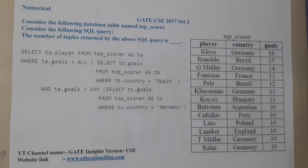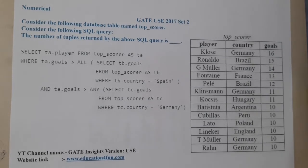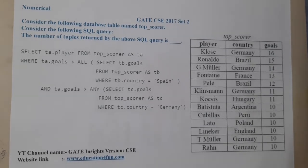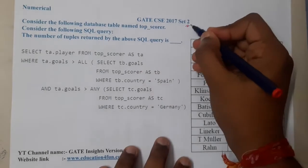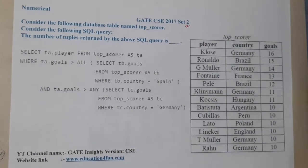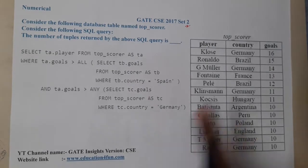Hello guys, we are back with our next lecture. In this lecture let us go through the next question. This question belongs to GATE CSE 2017 Set 2. The given question asks us to consider the following database table called top_scorer, consider the SQL query, and find the number of tuples that will be returned.